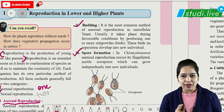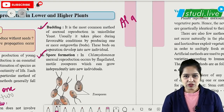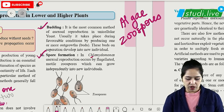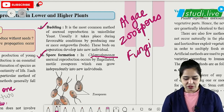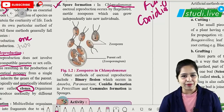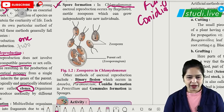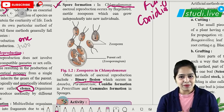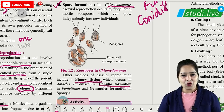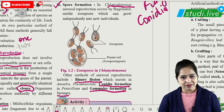After budding we have spore formation, shown by algae and fungi. Algae produce motile spores called zoospores — example is Chlamydomonas. Fungi produce non-motile spores called conidia. Binary fission occurs in Amoeba and Paramecium, where the organism divides into two. Gemmule formation occurs in sponges — gemmules are a mass of cells forming internal buds.